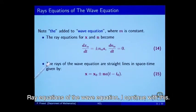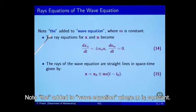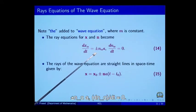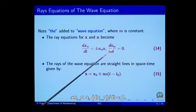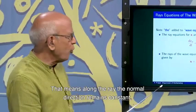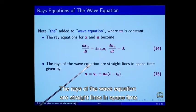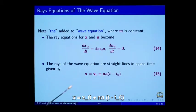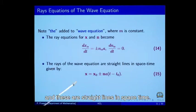Ray equations of the wave equation continued. When m is constant, the ray equations become: dx_alpha/dt = plus or minus n_alpha and dn_alpha/dt = 0. This means along the ray, the normal direction remains constant. Therefore, the rays of the wave equation are straight lines in space-time, given by x = x_0 plus or minus n_alpha (t - t_0). These are straight lines in space-time.